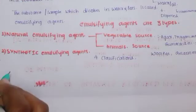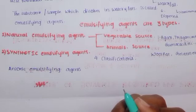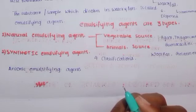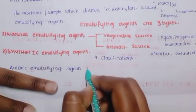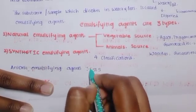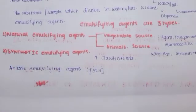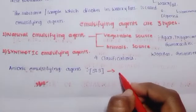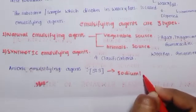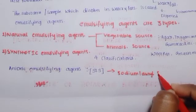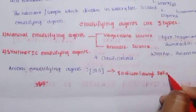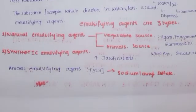Anionic emulsifying agents — we know that an anion is the negatively charged one. An example of an anionic emulsifying agent is sodium lauryl sulfate, also known by the short form SLS.